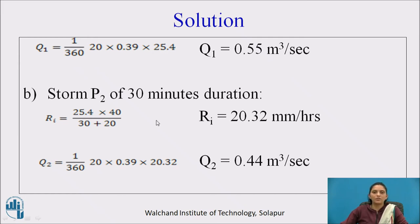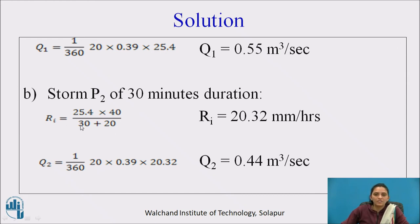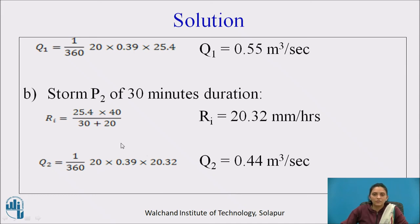Similarly, calculate for storm P2. Storm P2 has a duration of 30 minutes, which is more than 20, so from Table 3, A = 40 and B = 20. Putting the duration T = 30 into the formula gives R_i = 20.32 mm/hour. Therefore, discharge Q2 = 0.44 m³/s.